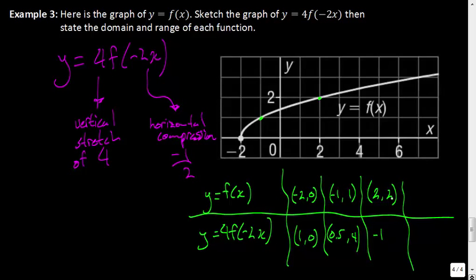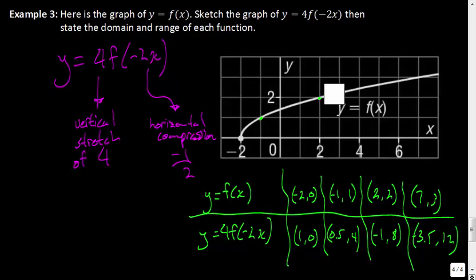The last nice point is (7, 3). 7 × (−½) gives a decimal — you can write it as −7/2 or −3.5. And 3 × 4 = 12. My guess is we're not going to be able to graph that one. What I'm going to do is graph our new function in green.